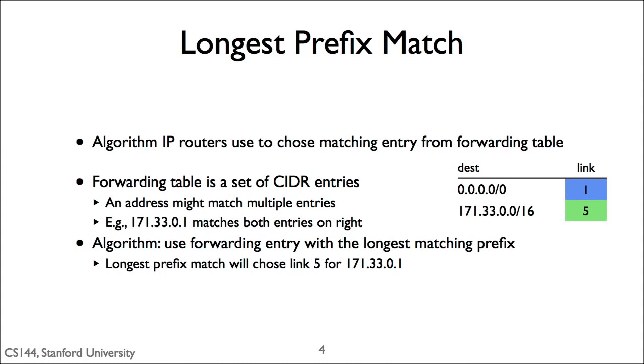Every router has a forwarding table. Entries in this forwarding table have two parts: a CIDR entry describing a block of addresses and a next hop for packets that match that CIDR entry. An address might belong to multiple CIDR entries.